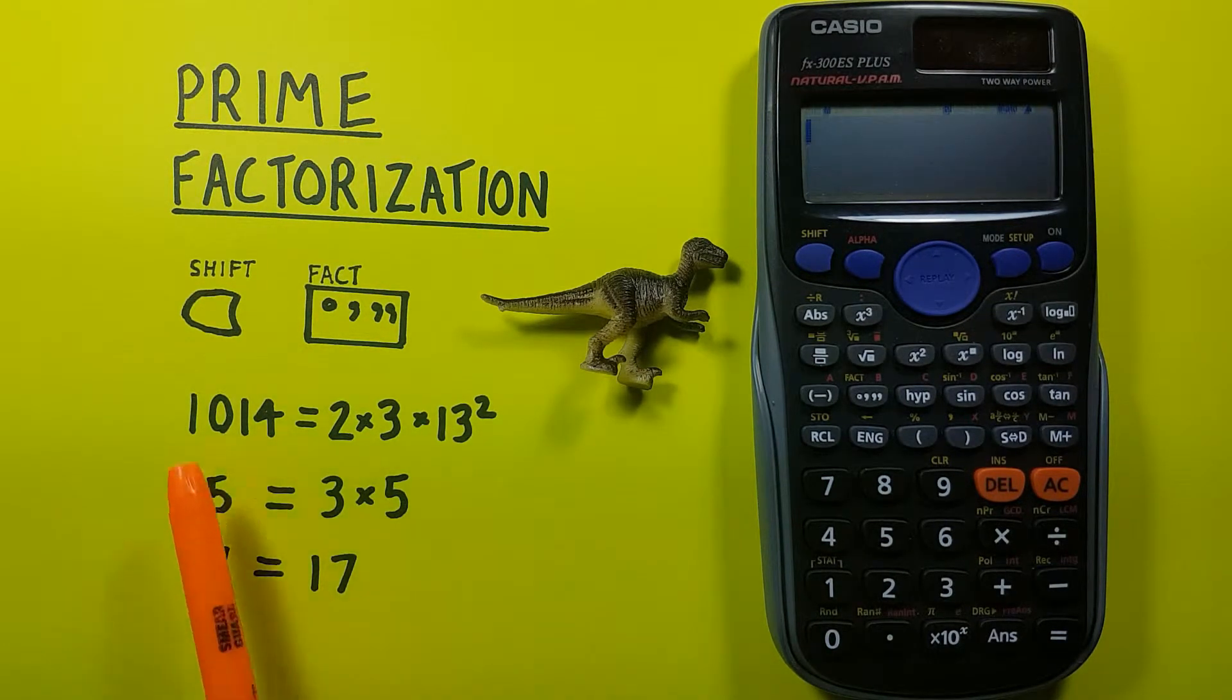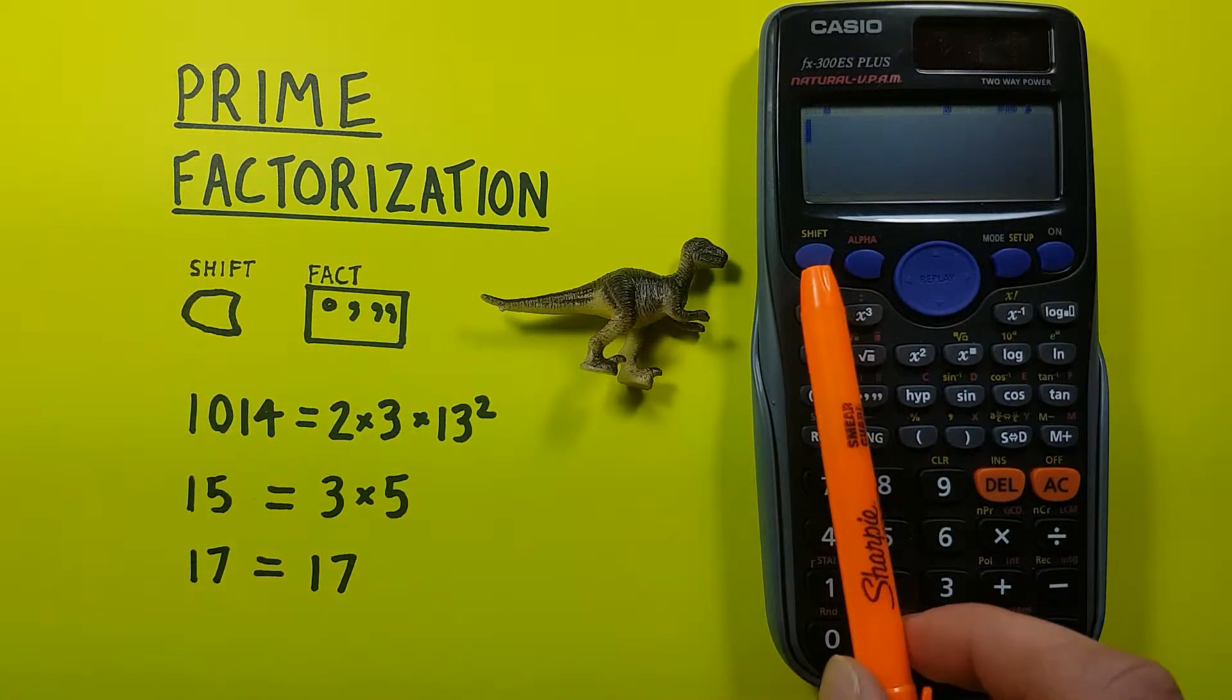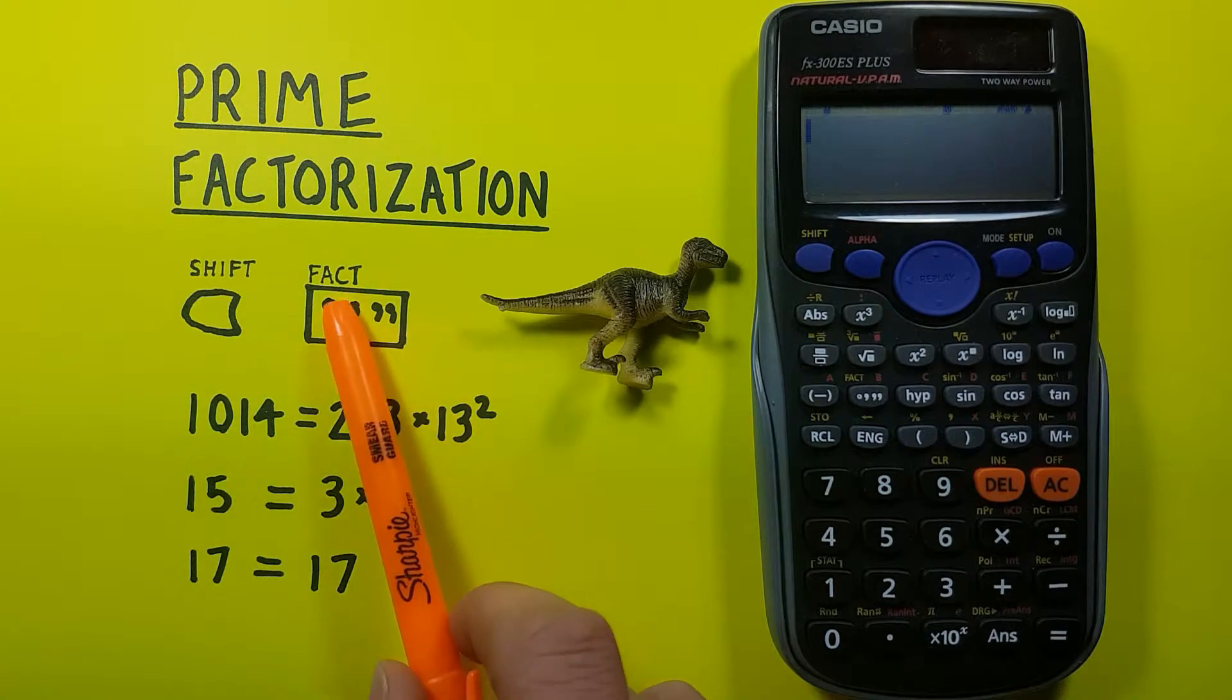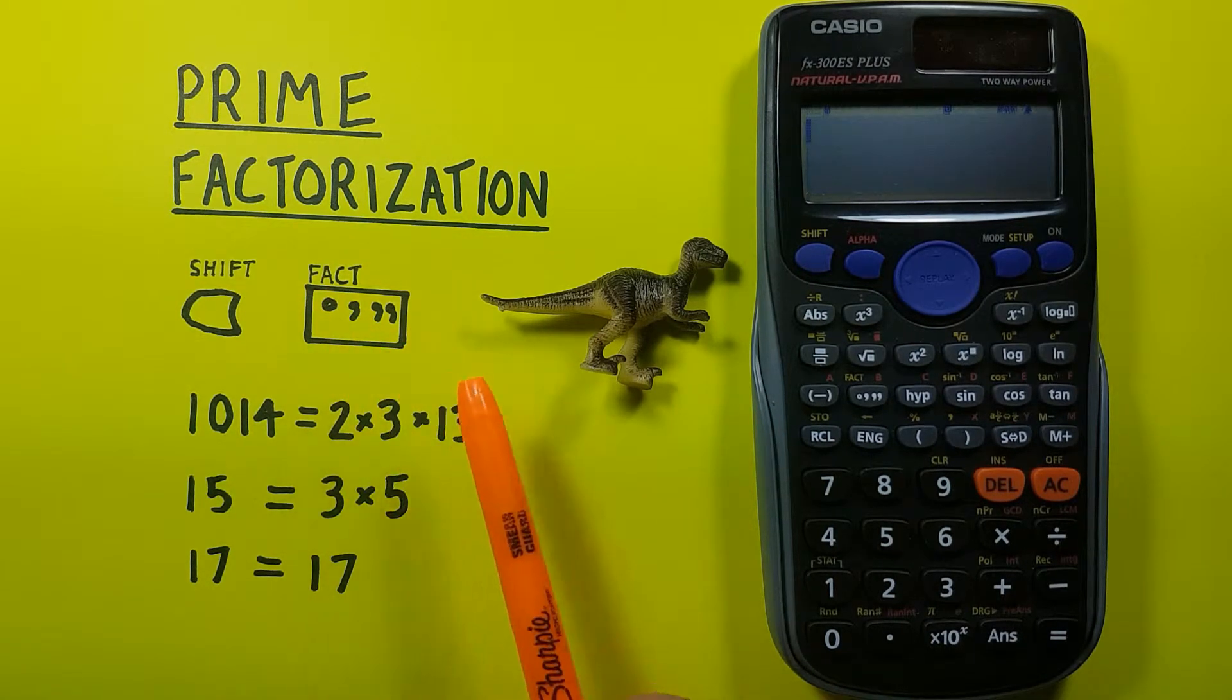To do this we'll be using the shift key, which looks like this and is located here in the top left, and the degrees minute seconds key with the factor shift function located here.